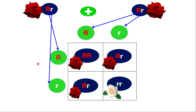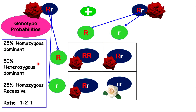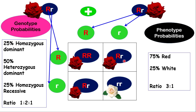Let's analyze these results in terms of genotype and phenotype. The genotype possibilities are: 25% chance of homozygous dominant, 50% chance of heterozygous, and 25% chance of homozygous recessive — giving a genotype ratio of 1:2:1. For the phenotype results, three out of four gives a 75% chance of getting a red flower, and only a 25% chance of getting a white flower, giving a phenotype ratio of 3:1.